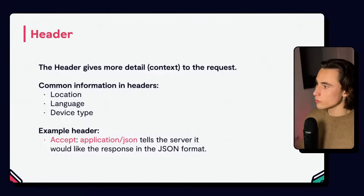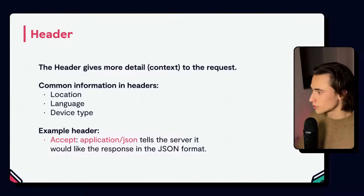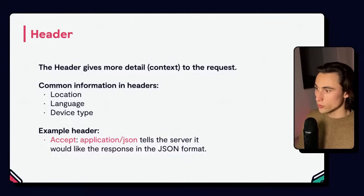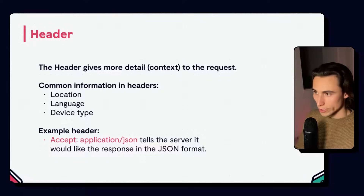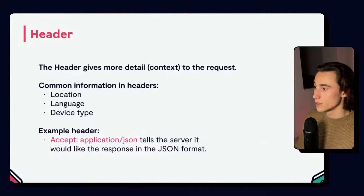Then we have the header. The header gives us a little bit more detail or context for a given request. Common information you will find in a header includes your location, your language preference, or your device type. Every time you open a page on the internet, you're making an API request to a server, and the server is responding with the web page. An example of a header would be "Accept: application/JSON", which tells the server that it would like the response of the HTTP request in the JSON format.